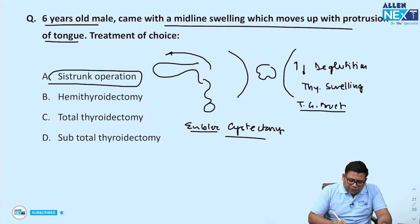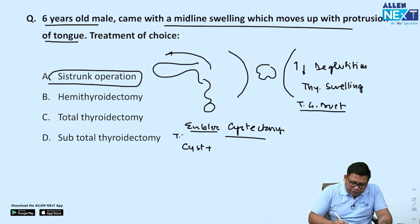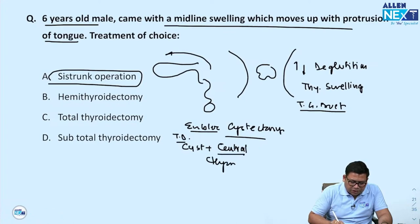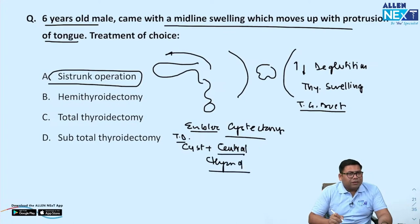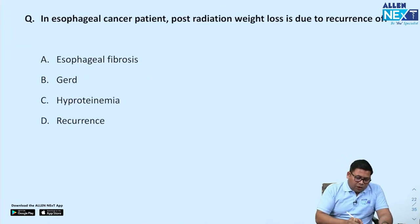What is Sistrunk's operation? Removal of the thyroglossal duct cyst along with removal of the central part of the hyoid bone. This is what is very important.